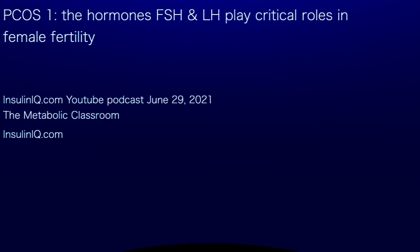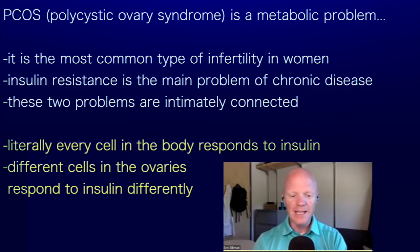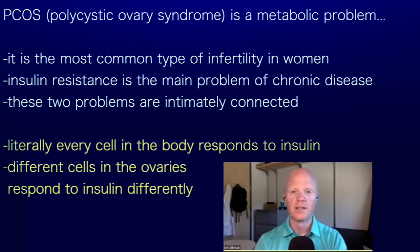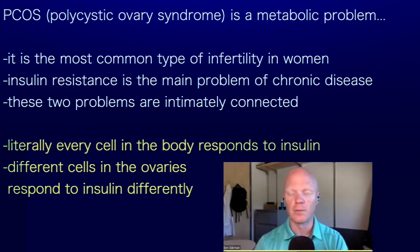PCOS Part 1, from the Metabolic Classroom YouTube Podcast. Lest the name polycystic ovary syndrome muddy the water, this is a metabolic problem. It is the most common infertility in women, and it's no coincidence that insulin resistance happens to be the single most common problem, full stop. These two are intimately connected, and it's just a further reflection of how relevant insulin is throughout the body.